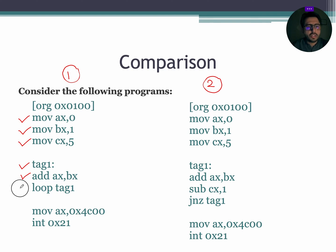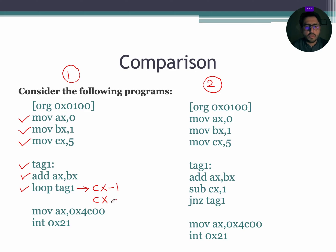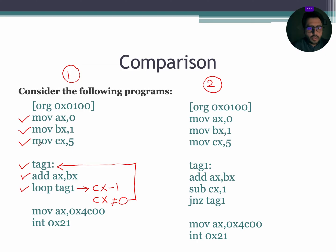Moving forward to the next instruction: LOOP tag1. LOOP tag1 means decrement CX, and after decrement check the value of CX. If CX is not equal to 0, jump back to the declared tag; else exit the loop. So CX will be updated to 4. As CX is not equal to 0, it will jump back to tag1. This process will repeat until CX becomes 0, so program 1 will execute this block 5 times. The final values will be AX = 0005, BX = 0001, and CX = 0000.